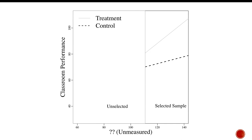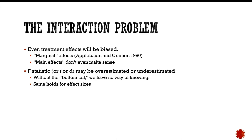So with an interaction effect, even treatment effects will be biased or what Applebaum and Kramer call the marginal effects. And in this situation, the main effects don't even make sense because they depend on that variable, that third variable. So F statistic or the T statistic or the D statistic may be overestimated or underestimated. And without the bottom tail, without knowing how the rest of the population performs, we have no way of knowing. And the same holds for the effect sizes.